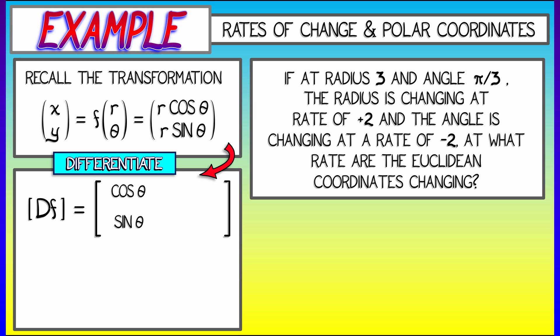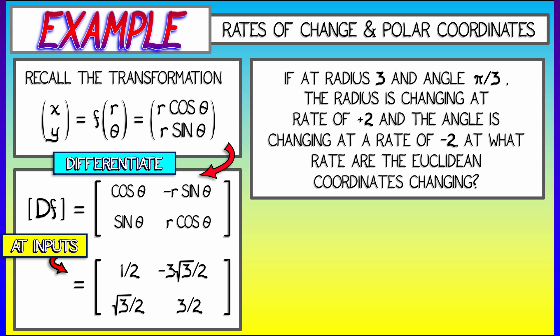So compute the derivative of this. That's an exercise that we've done before. We get the partials with respect to r, and then the partials with respect to theta. If we evaluate that 2x2 matrix at our inputs at r equals 3 and theta equals pi over 3, we get the matrix 1 half root 3 over 2 in the first column, and negative 3 root 3 over 2 and 3 halves in the second column.